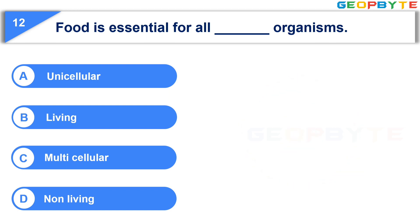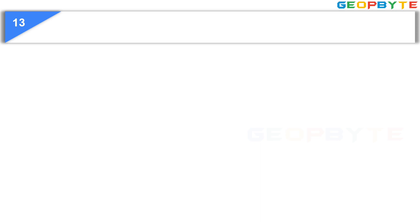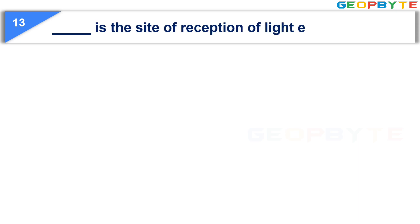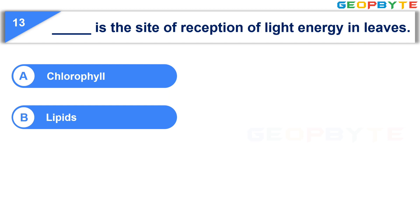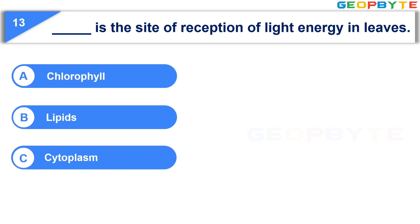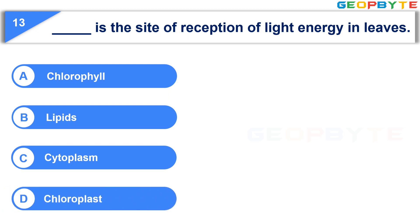Your time is up and the correct answer is Option B, Living. The next question is: Dash is the site of reception of light energy in leaves. Option A: Chlorophyll. Option B: Lipids. Option C: Cytoplasm. Option D: Chloroplast. Your time starts now.